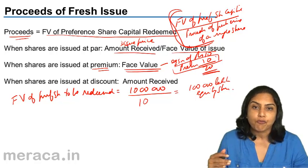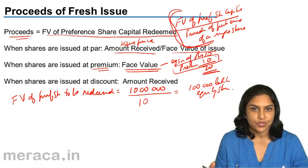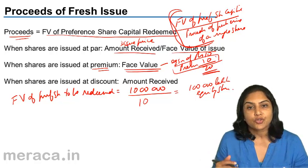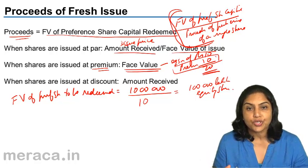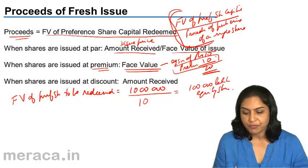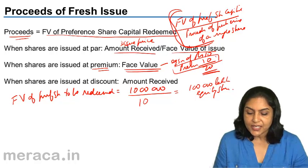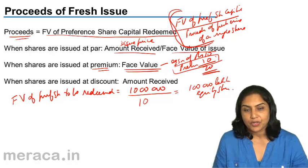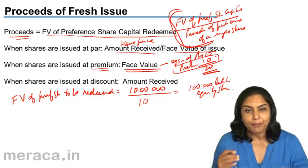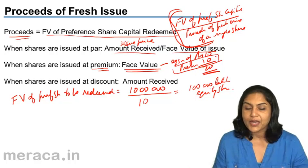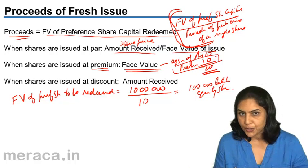This is because though an extra 10 rupees premium comes in, securities premium cannot be used to redeem preference shares. Securities premium has four limited uses. We cannot use it for redemption of preference shares, though it can be used to set off the premium on redemption of preference shares. So when shares are issued at a premium, we consider the face value to find out the number of shares to be issued as fresh issue.